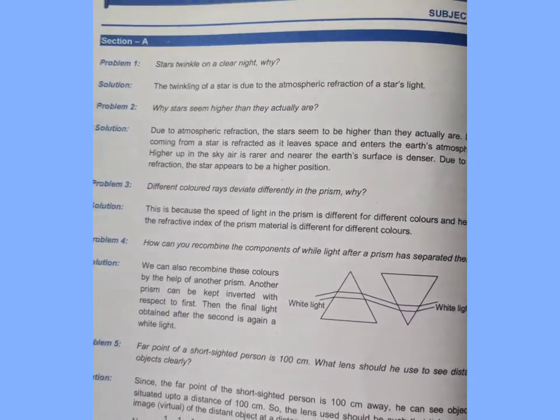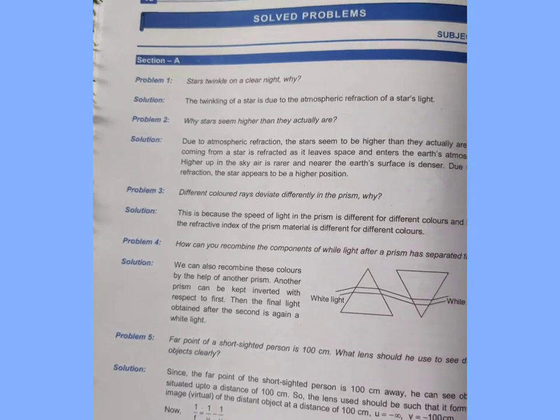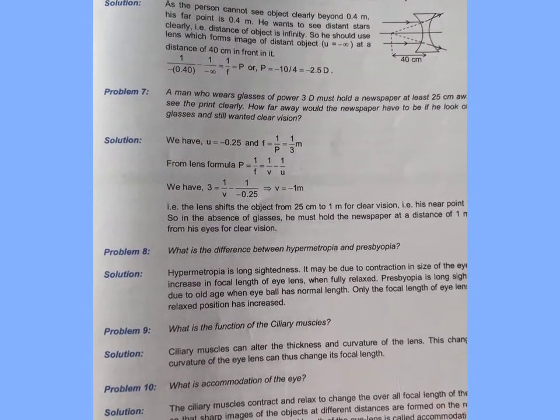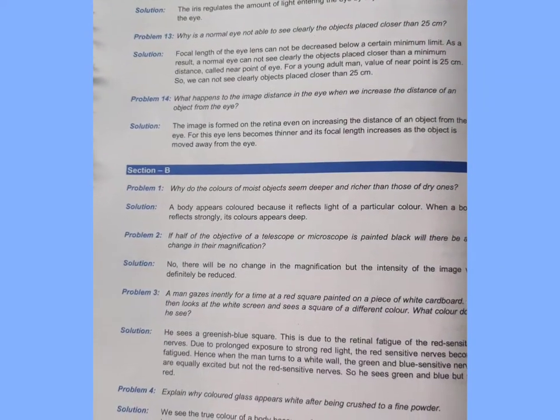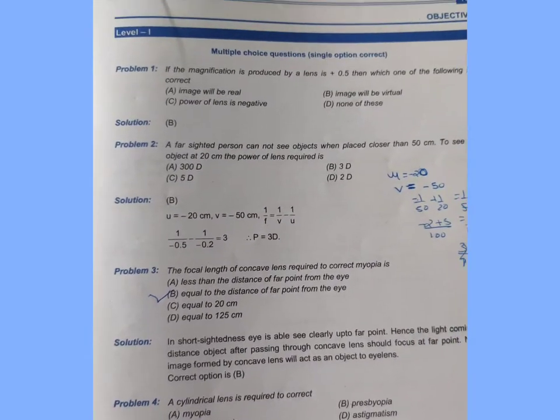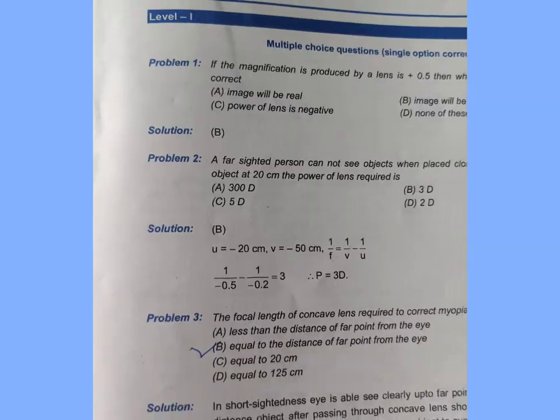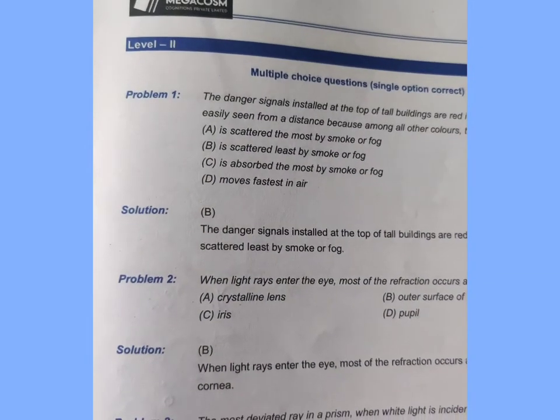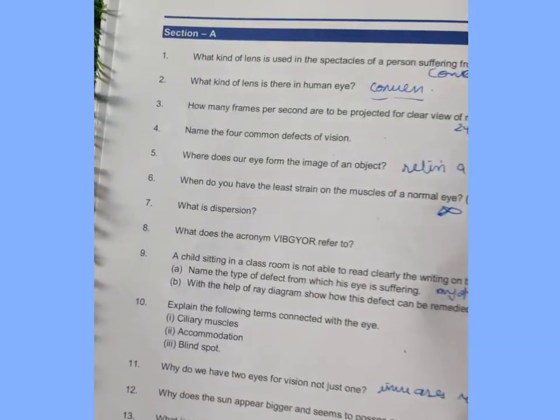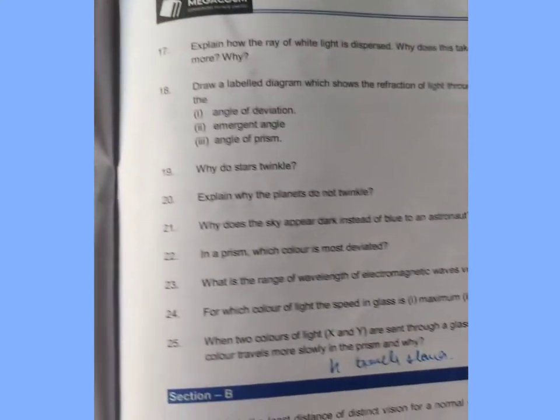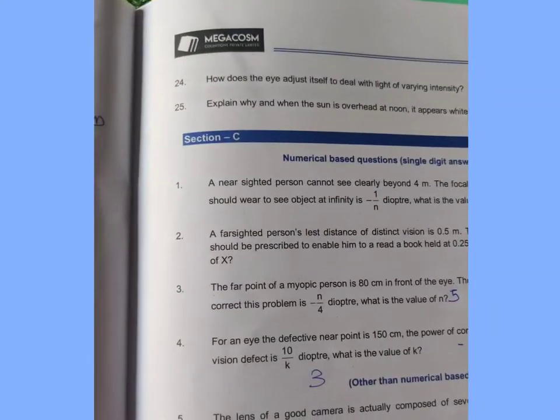You also have short answer questions and solve problems. There is Section A, Section B, and sometimes Section C as well. Then there are MCQs — this is Level 1, these are all solved problems, and this is Level 2 and Level 3. Then you have SQP (Sample Question Paper) followed by unsolved problems. Section A has 25 questions, Section B also has approximately 25 questions, and Section C consists of almost 8 questions. These are all your unsolved questions.